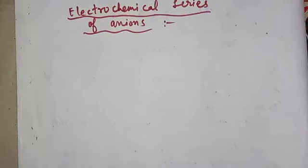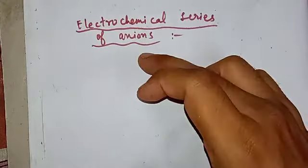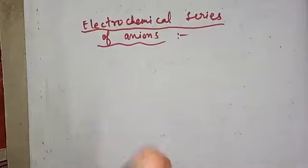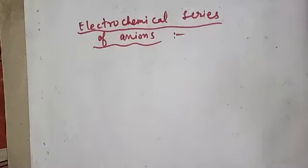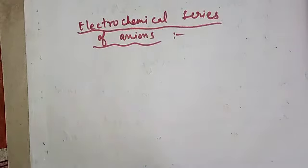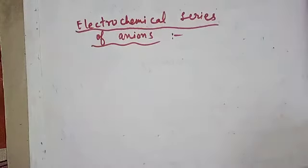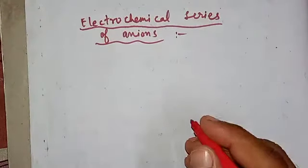That is why we need to know the electrochemical series of anions as well. Just as different metals have different tendencies to lose electrons, anions also have different tendencies to get discharged — similar to what you saw in the case of cations. Basically six anions are there in this series which you have to learn.